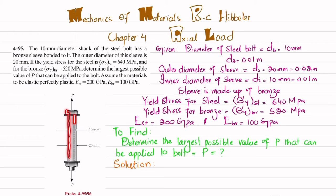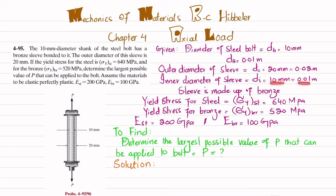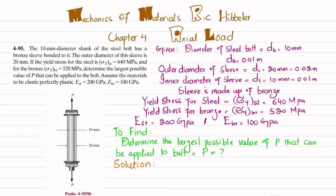You can see this bolt has a diameter of 10 millimeter, which is 0.01 m. The outer diameter of the bronze sleeve bonded to it is 20 millimeter, which is 0.02 m, and the inner diameter is the same as the bolt diameter. The yield stress for steel is 640 MPa, for bronze it is 520 MPa, and their moduli of elasticity are as mentioned. We have to determine the largest possible value of P.